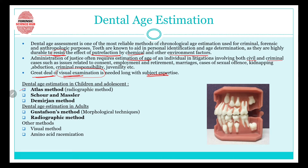There are different methods for determining dental age. For children and adolescents there are three methods: the atlas method, which is a radiographic method; the Schour and Massler method; and the Demirjian method. For determining age in adults, we have Gustafson's radiological method and some other methods like the visual method and amino acid racemization. In this video I'm going to discuss the three methods used for age estimation in children, and all other methods will be discussed in my next video.